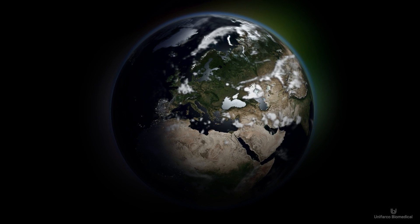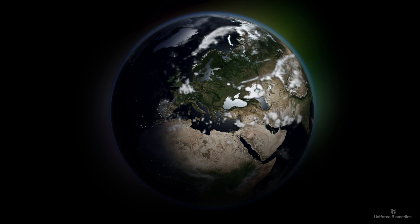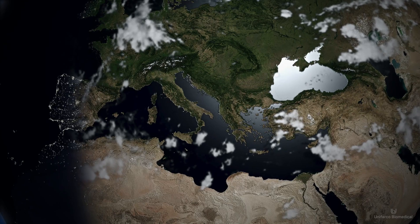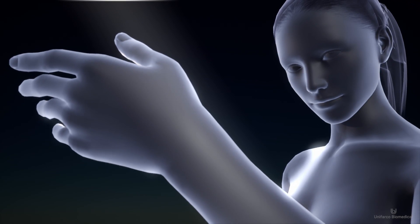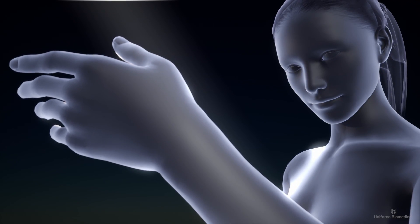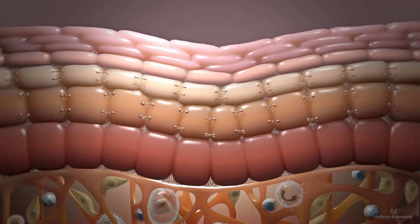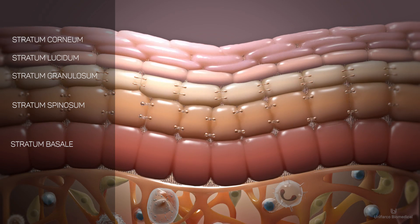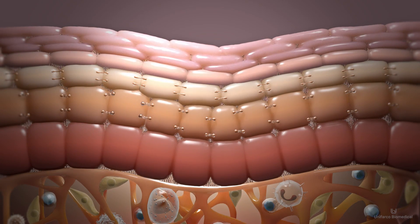Life on Earth would not be possible without a barrier that preserves us from dehydration. This is the reason why the skin barrier plays an essential role in the life of human beings. The top layer of the skin, called the epidermis, forms the epidermal barrier and serves as the body's first line of defense against external agents.